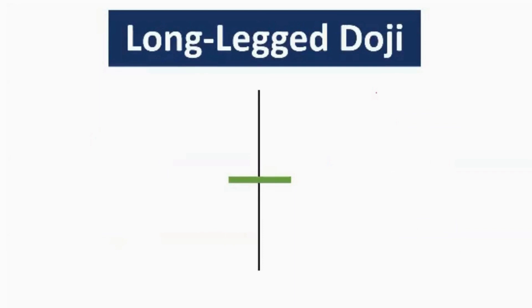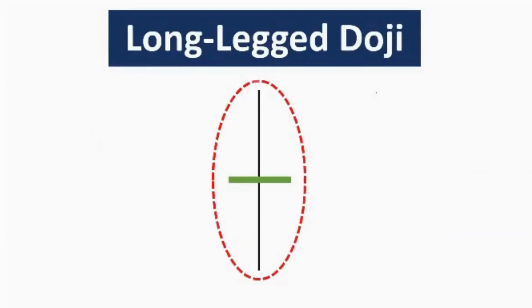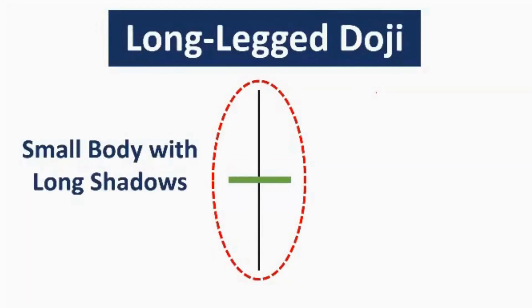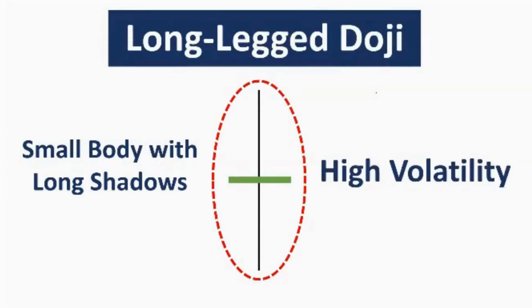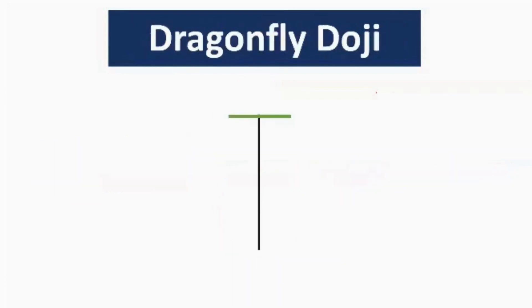The next pattern is the long leg doji — my personal favorite. The body of this candle is small but it has long shadows, meaning the number of buyers and sellers are strong and fighting to gain control over the market. This candle indicates high volatility. If you find this pattern after a potential trended market along with good volume and various confirmations, you can take a trade on it. The stop loss will be small but the positional gains can be very large.